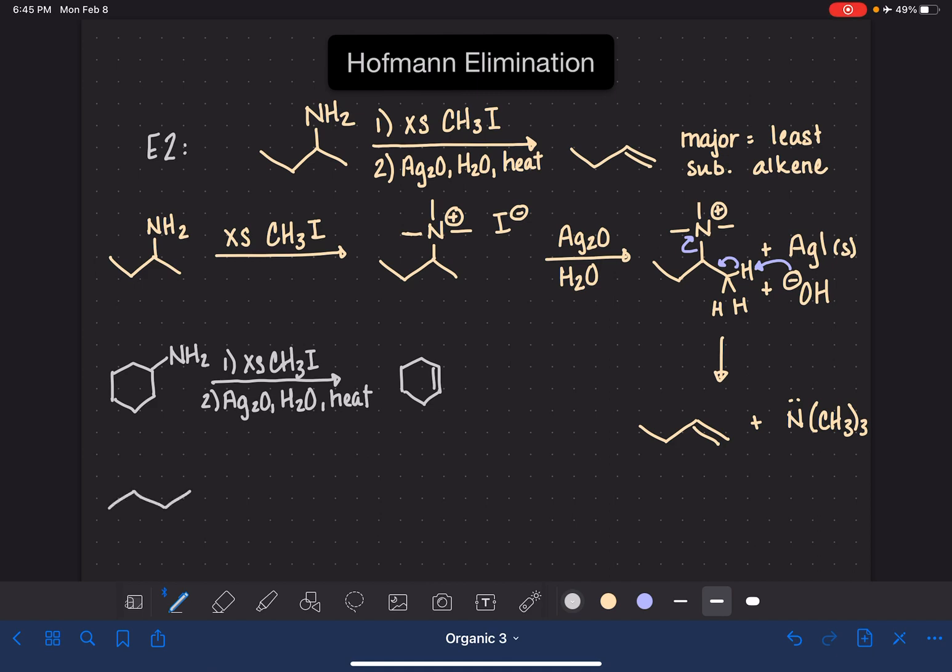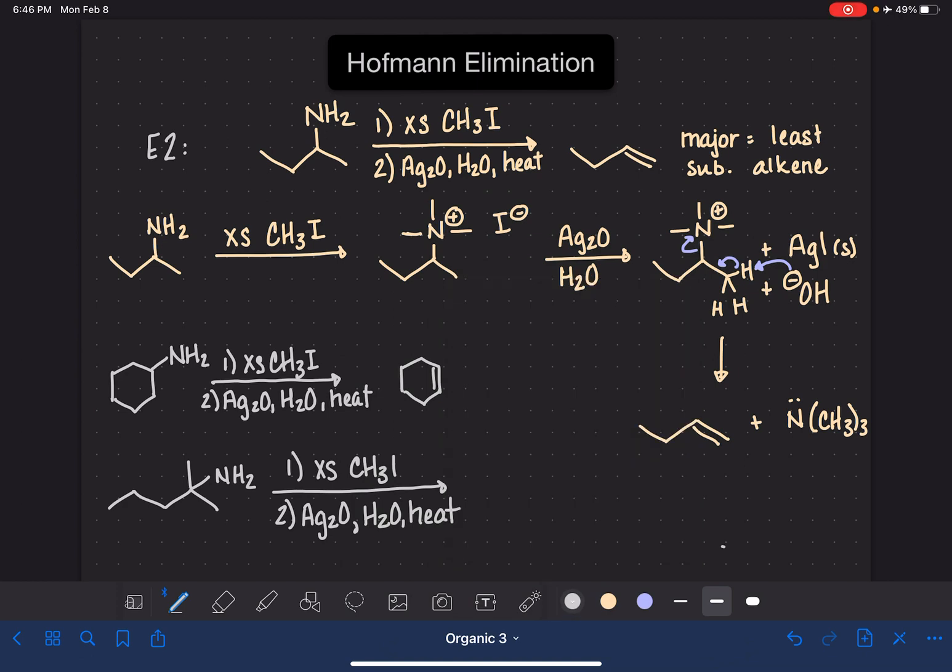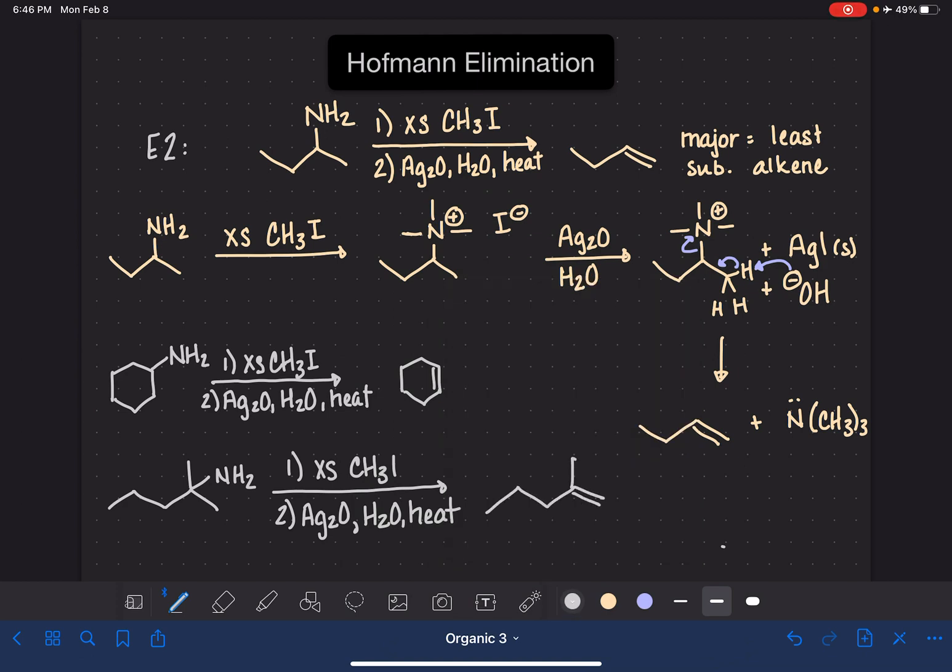Let's do one more example so we can practice thinking about the least substituted alkene. Same reagents again, excess CH3I followed by Ag2O in water with heat. We know that we're going to be eliminating the NH2 group, so the carbon that was holding the NH2 group does need to be part of the carbon-carbon double bond. Our carbon-carbon double bond could go this way, or it could go this way, and this way is exactly the same as going this way. We want the least substituted alkene. This is a tertiary alkene. This would be a secondary alkene, so that's definitely what we want to make.